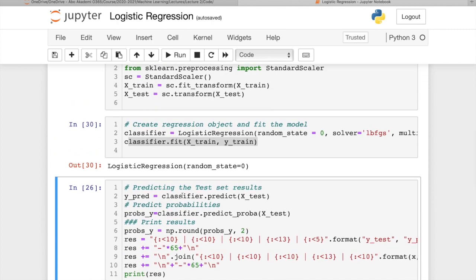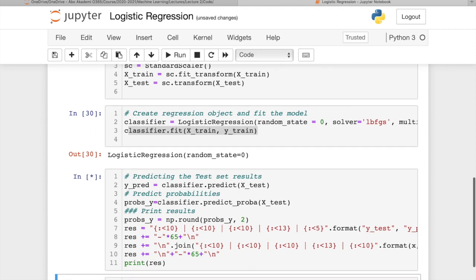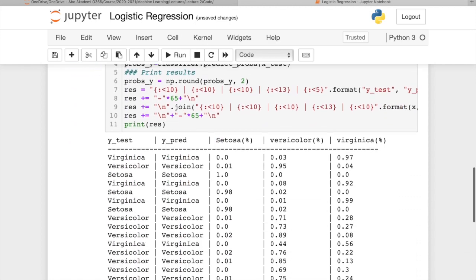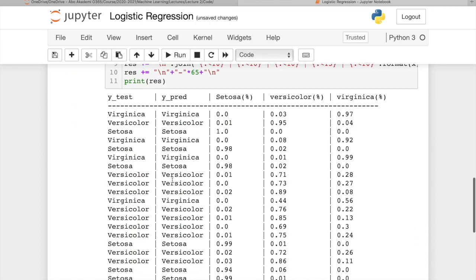So we have a fitted model. We want to see how good our model is working. Basically, we are predicting the test result by applying our model to predict the values in X test. And then we build a table. These are all for visualization to see how good the prediction is.